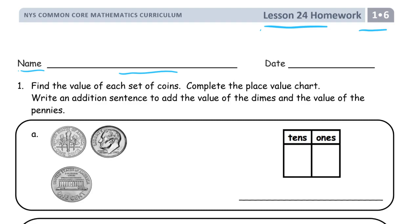We're finding the value of sets of coins. Complete the place value chart. These are the place value charts. And then we're going to write an addition sentence to add the value of the dimes and the value of the pennies. So that's right here. And as soon as I do this first one, you'll know exactly what it should look like.